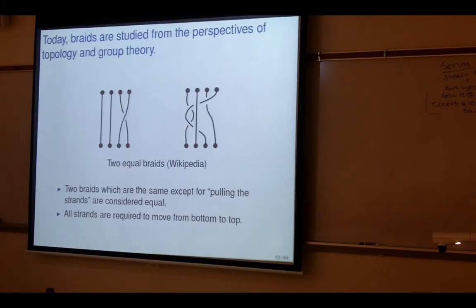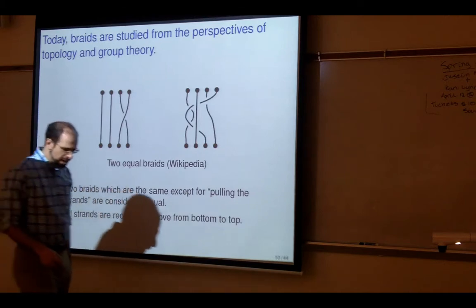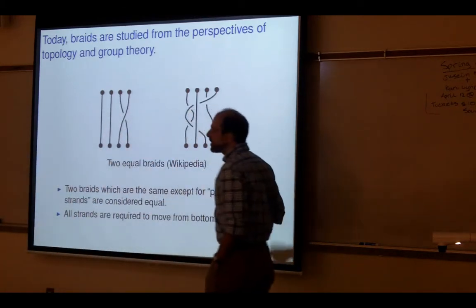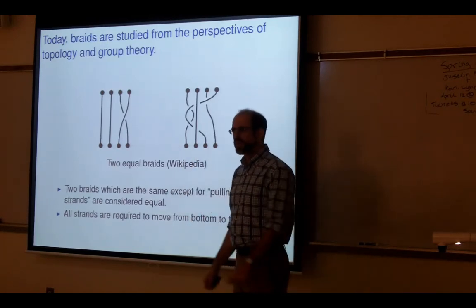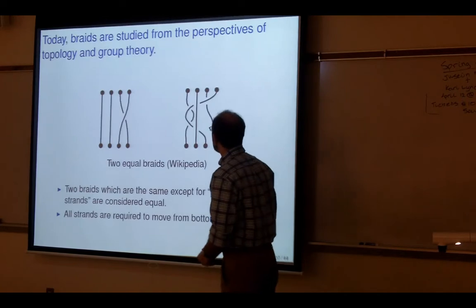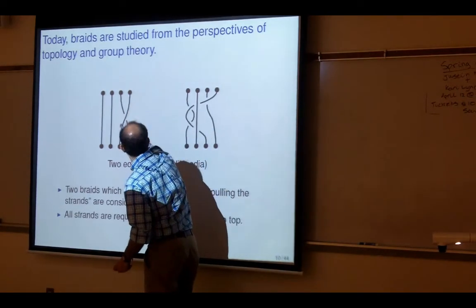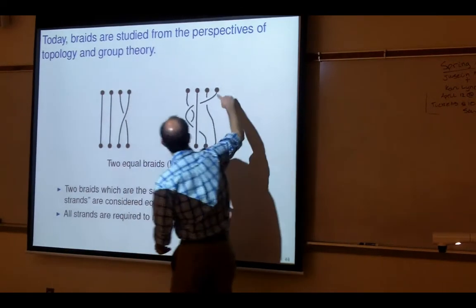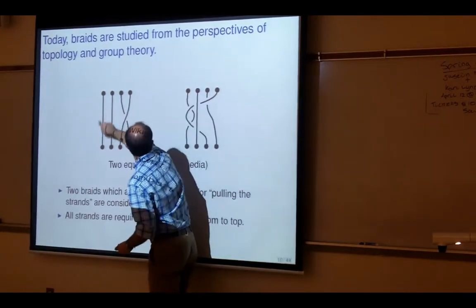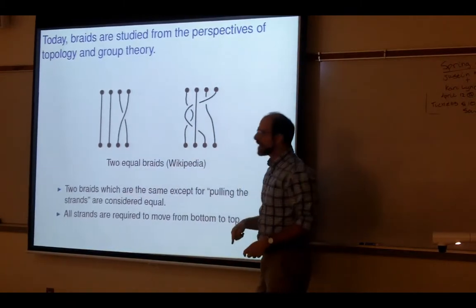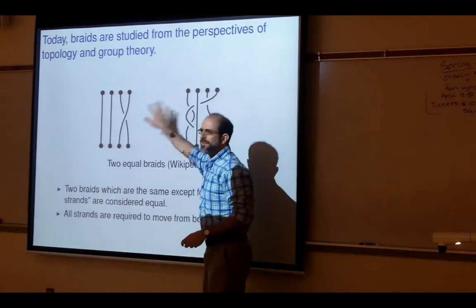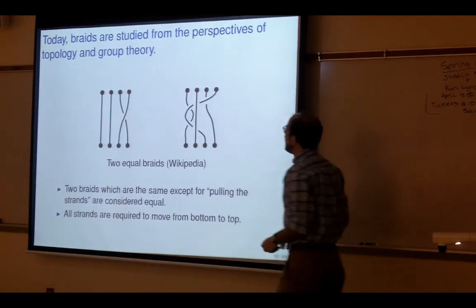Today braids are studied by topologists and group theorists. Topology is the study of things that are the same if you pull, push, and stretch them around without breaking them. You can see how this strand was pulled under that strand, then over another — and topologically speaking these two braids are the same. So those are considered equivalent.